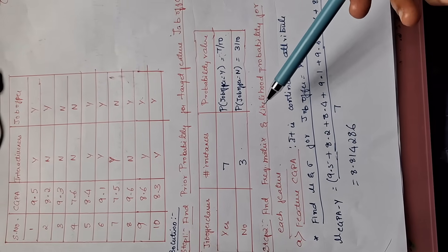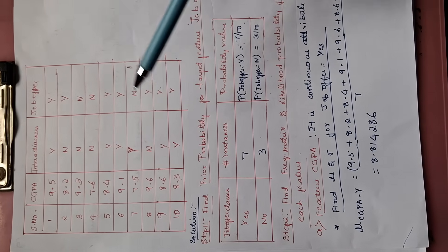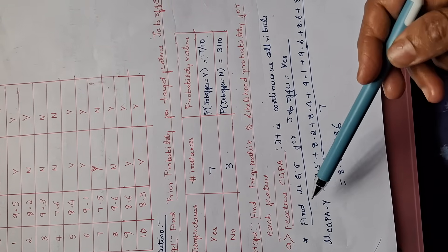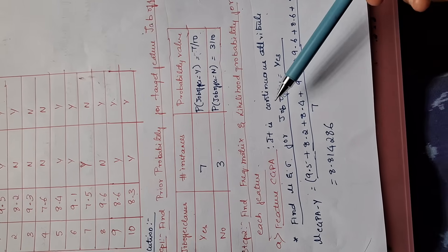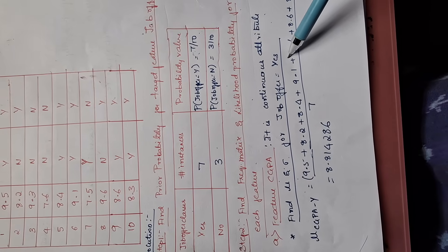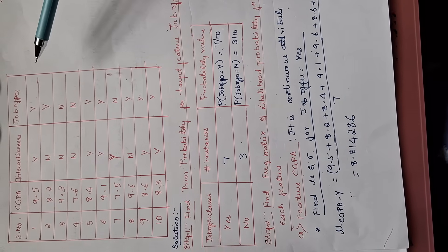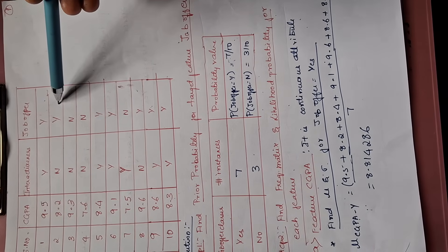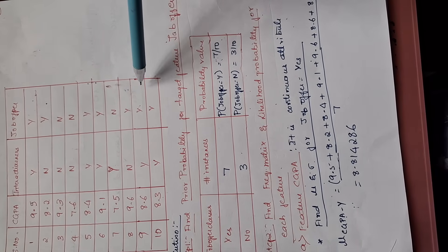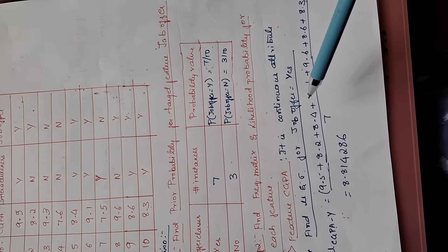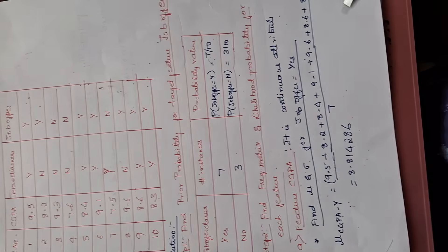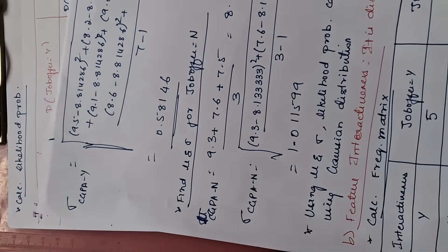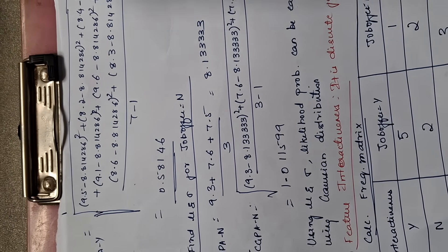Step 2: Find the frequency matrix and likelihood probability for each feature. We have two features: CGPA and interactiveness. Let's first do CGPA. Since CGPA has continuous values, it is a continuous attribute. First step: find the mean μ and standard deviation for job offer yes. μ for CGPA yes — add up all CGPAs where job offer is yes: 9.5 + 8.2 + 8.4 + 9.1 + 9.6 + 8.6 + 8.3 divided by 7. I am getting μ as 8.814286. Now let's find the standard deviation for CGPA yes.